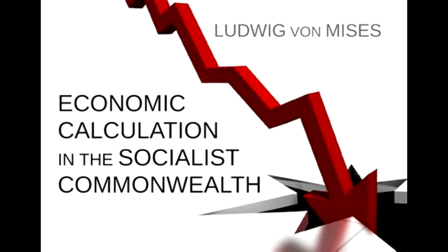Monetary calculation has its limits. Money is no yardstick of value nor yet of price. Value is not indeed measured in money nor as price. They merely consist in money. Money, as an economic good, is not of stable value as has been naively but wrongly assumed in using it as a standard of deferred payments. The exchange relationship which obtains between money and goods is subjected to constant, if as a rule not too violent, fluctuations originating not only from the side of other economic goods but also from the side of money.